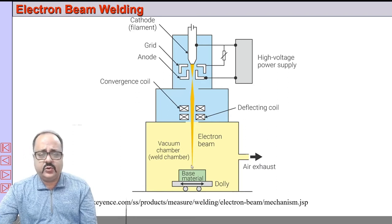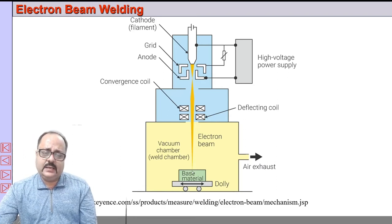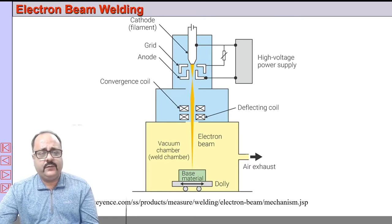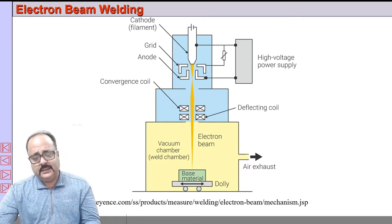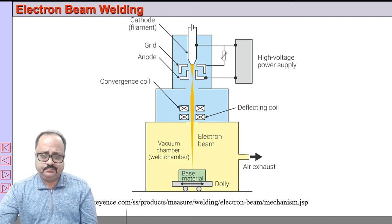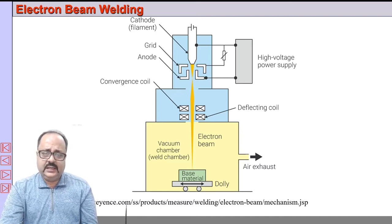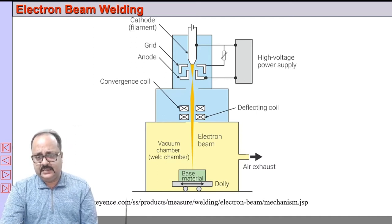By controlling the crossover, two different modes of electron beam welding can be used: conduction mode and keyhole mode, which will be discussed in subsequent slides.